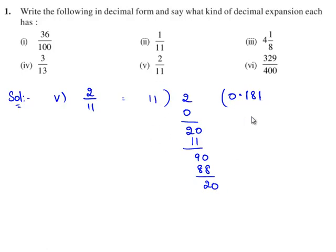11 goes into 20 one time, as 11 times 1 is 11, and we are left over with remainder 9. Because of the decimal point, 9 becomes 90. 11 goes into 90 eight times, as 11 times 8 is 88.